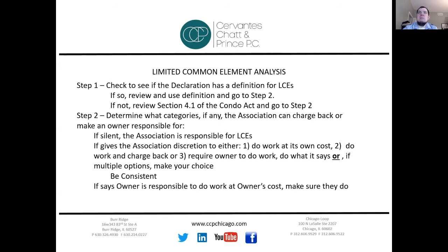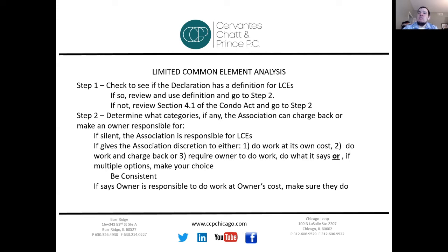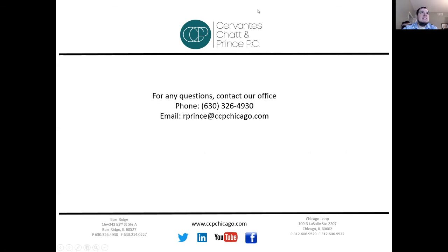The key is to be consistent. You can't replace one owner's patio at association cost and then make another owner do it themselves — you need to be consistent. If an owner is responsible for doing the work, make sure they actually do it. They are common elements after all, and under section 18.4(a)(1), an owner could use that as a basis to hold you liable if something goes wrong. This is why many clients choose to do the work on a global scale and charge the cost back — that way they control the work and don't rely on everyone knowing a contractor. That's limited common elements in a nutshell. If you have any questions, feel free to contact our office.